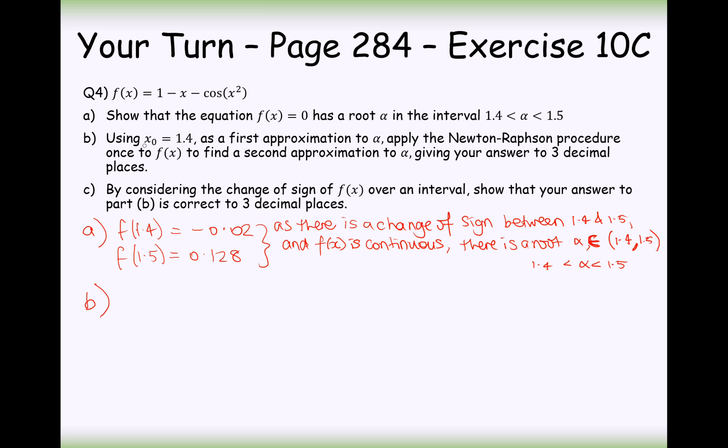Part B then. Using x₀ equals 1.4 as the first approximation, apply the Newton-Raphson procedure once to find f(x) to find a second approximation to alpha to three decimal places. So, the first thing we're going to need to do here is we're going to have to differentiate. 1 will differentiate to 0. Minus x will differentiate to minus 1. Cos squared, now if I remember rightly, cos differentiates to minus sin, so minus cos will differentiate to positive sin. And the x² here needs to be derived as well, so it's going to be 2x sin(x²). That's the derivative there. So the method we were using there is effectively differentiate the inside first, you get 2x, differentiate the outside second, you get sin(x²).